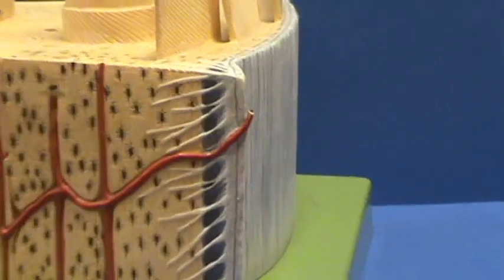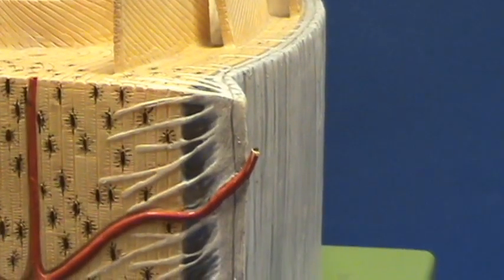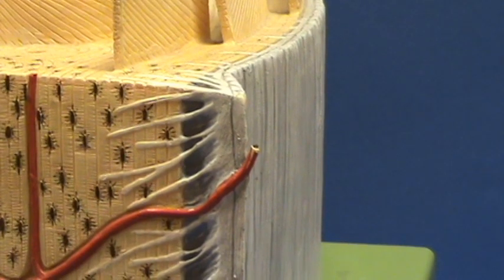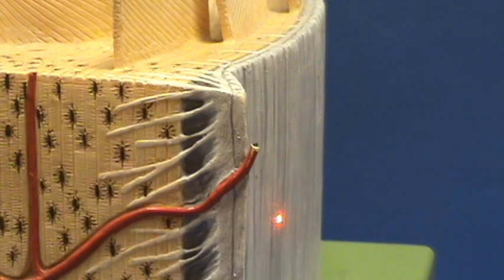If you look at the edge of the periosteum, you can see that there appears to be two layers. There's an outer layer, and if you look on the outside surface, inscriptions depict the fact that this is the fibrous layer.